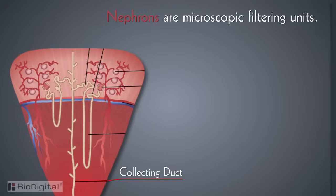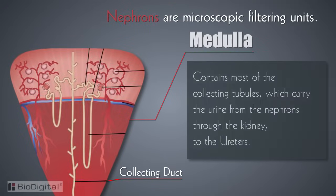The medulla is the inner section of the kidney. It contains most of the collecting tubules, which carry the urine from the nephrons through the kidney to the ureters.